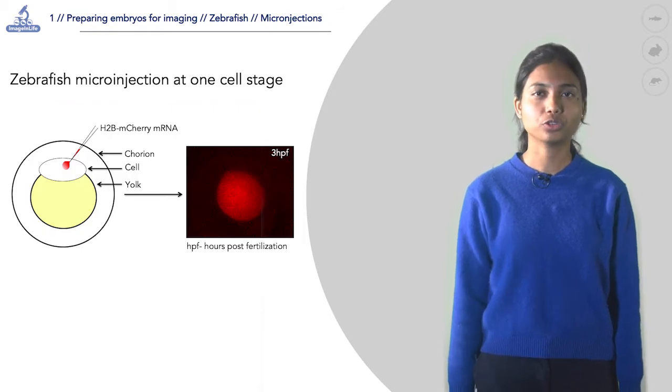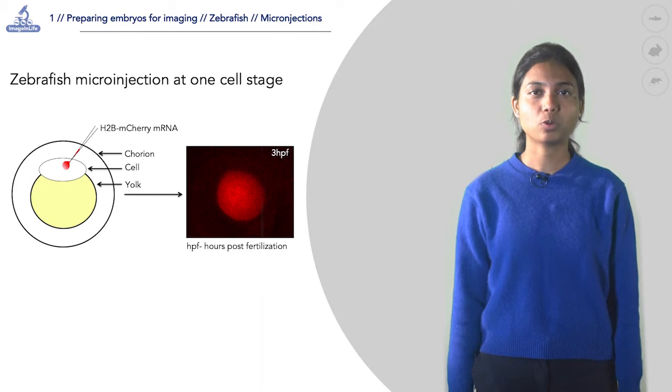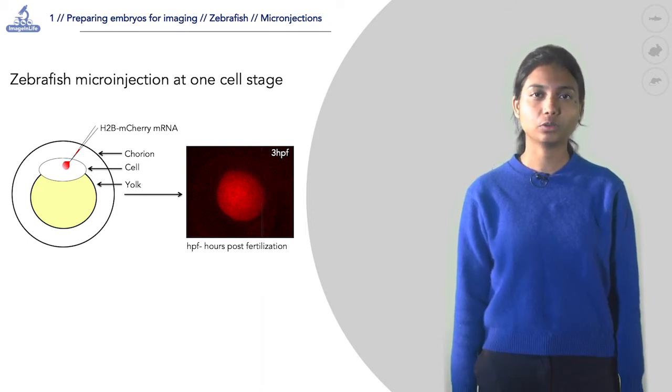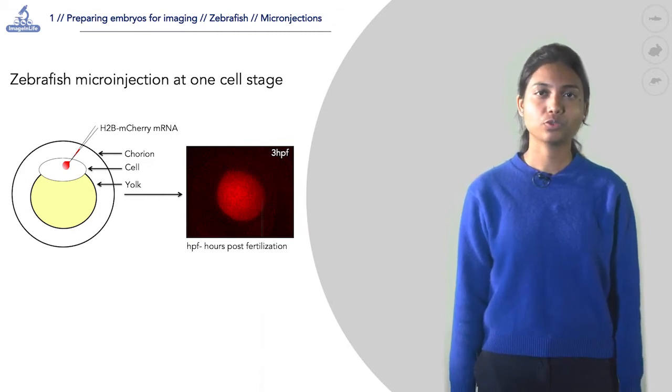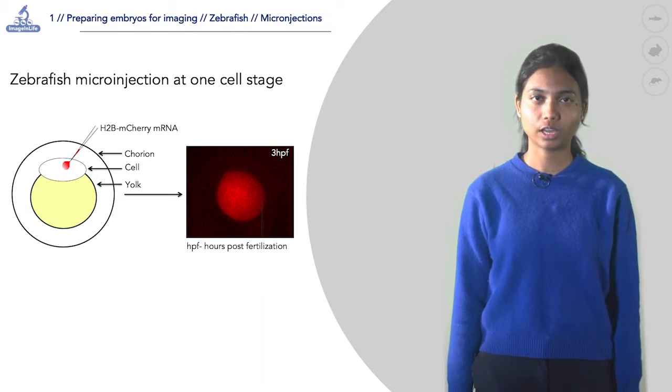Here in this session we show the procedure to inject H2B-mCherry mRNA into a one-cell stage zebrafish embryo in order to label the cell nuclei of the developing embryo. The histone 2B sequence fused with the mCherry fluorescent protein labels the chromatin in red in all cell nuclei.